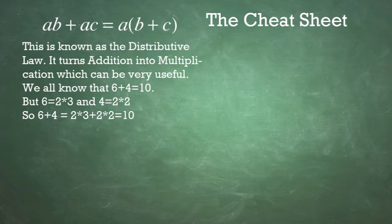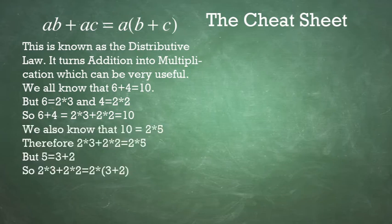So 6 plus 4 equals 2 times 3 plus 2 times 2, which equals 10. We also know that 10 is equal to 2 times 5.